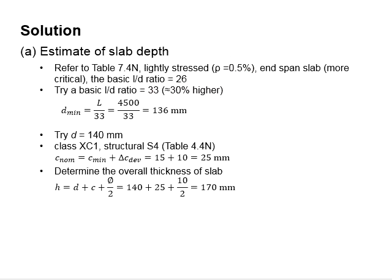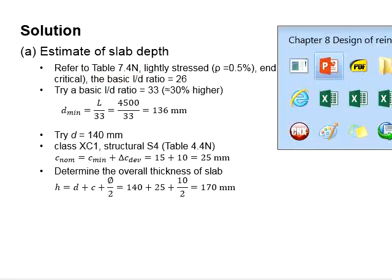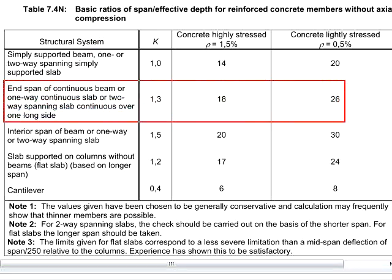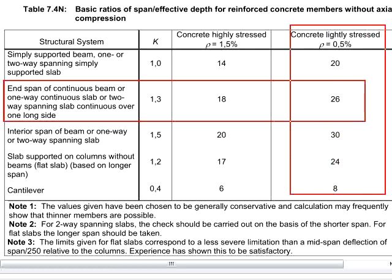To solve this question, first you need to determine the thickness of the slab. Refer to table 7.4N, which is this table. An end span continuous slab will be this one. Since you are designing the slab, normally the reinforcement bars are lightly stressed. Therefore, the basic L/D ratio will be 26.